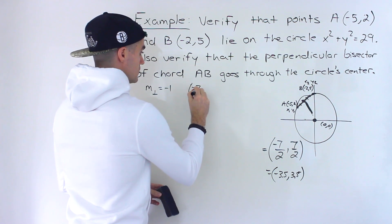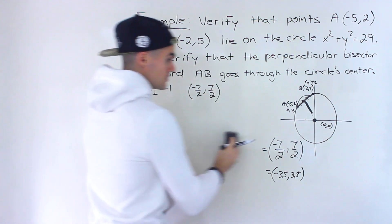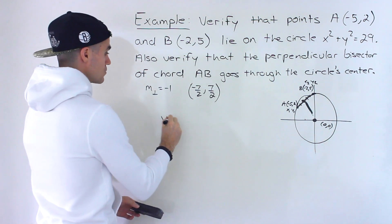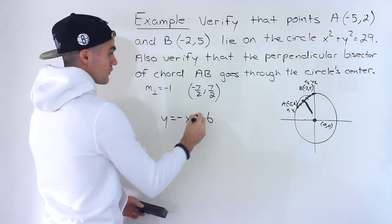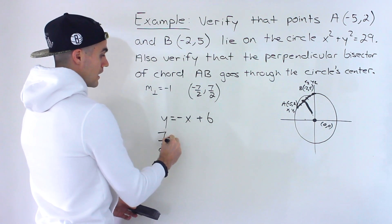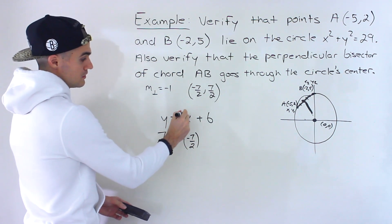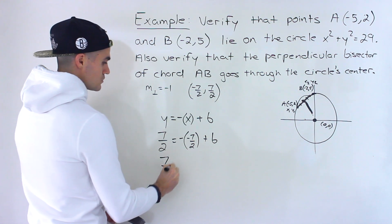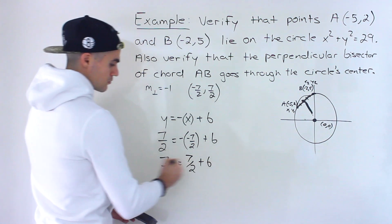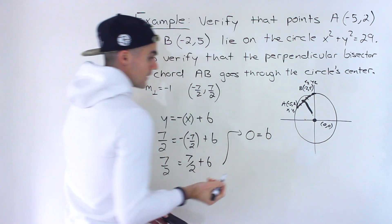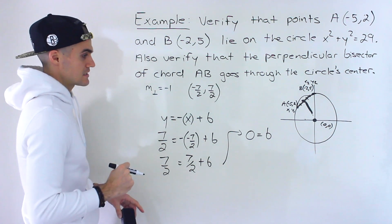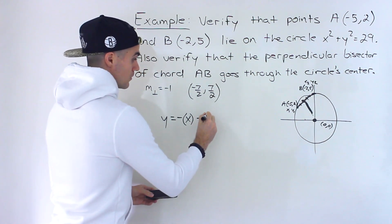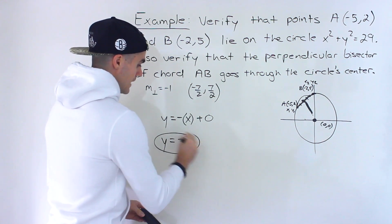Using fractions, we find the equation of the line with slope negative 1 passing through negative 7/2, 7/2. Plugging into y equals negative x plus b: 7/2 equals negative times negative 7/2 plus b, so 7/2 equals positive 7/2 plus b. Subtracting gives b equals 0. The equation is simply y equals negative x.